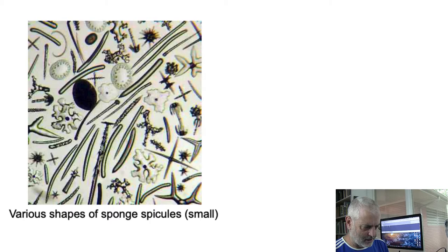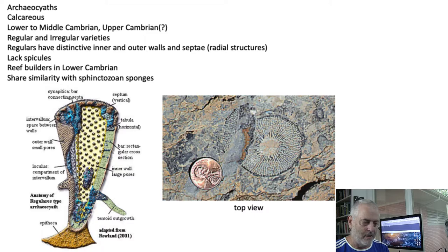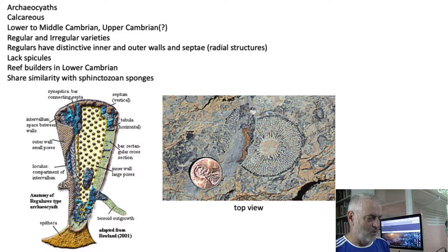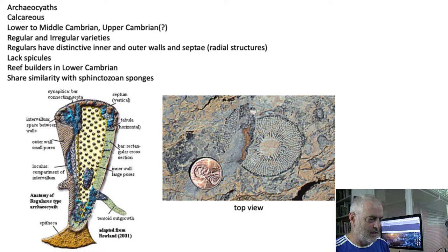Here are the archaeocyaths. They were calcareous — made out of calcite — lower to middle Cambrian, and then questionably into the upper Cambrian. The irregular variety probably went on to become some of the sphinctozoan sponges that eventually went extinct at the end of the Cretaceous. These things tend to lack spicules but still have the same structure — they still have an atrium and the osculum at the top. They're very unusual in the sense that they look like wagon wheels, with an outer double wall with partitions in it, making them very structurally rigid.